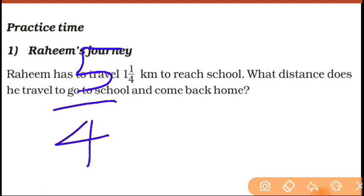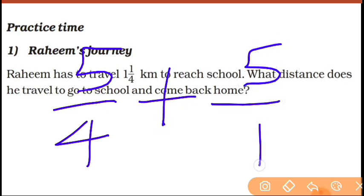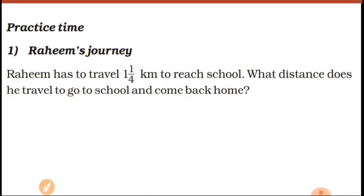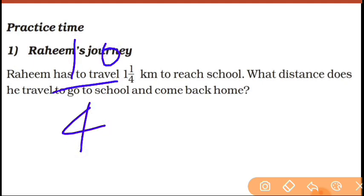So 5 upon 4 for home to school. You can do plus now. 5 plus 5 is 10, and the denominator is the same, so you get 10 upon 4, which simplifies to 5 upon 2.